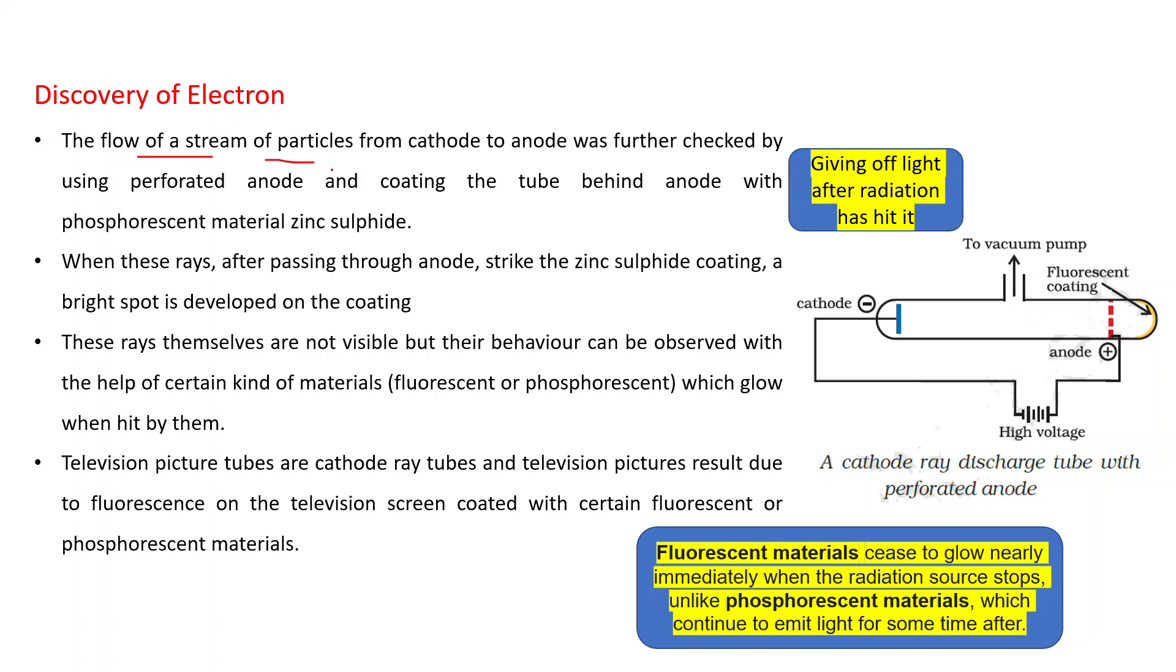The flow of a stream of particles from cathode to anode was further checked by using perforated anode, having whole small pores, and coating the tube behind anode with phosphorescent material zinc sulfide. What is this phosphorescent material? Material giving of light after radiation has hit it. You can see this diagram. This is the perforated anode and behind it, this tube is coated with the fluorescent material. When these rays after passing through anode strike the zinc sulfide coating, a bright spot is developed on the coating.